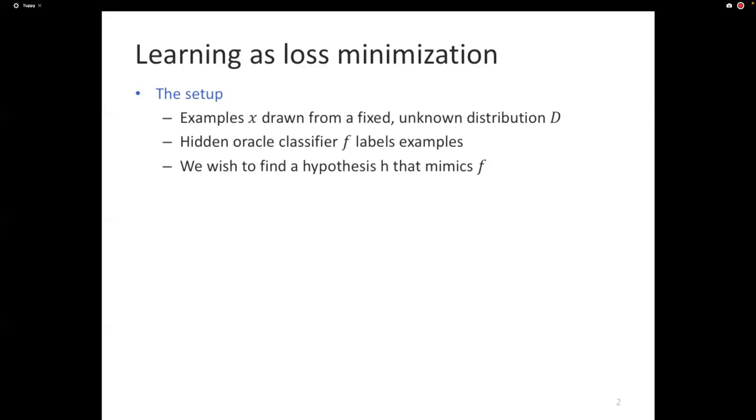The setup for this idea, and this is the dominant approach for machine learning today, the setup is we have examples x that are drawn from some fixed, possibly unknown distribution. We have a hidden oracle f that labels these examples. Our goal is to find the hypothesis that mimics f. This is exactly the same thing that we've done so far.